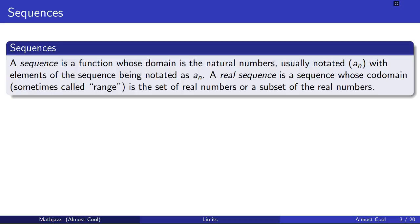So if I plugged in 4 for n, I would be talking about a sub 4, which is the fourth item on the list. A real sequence is a sequence whose codomain is the set of real numbers, and a real sequence is like an infinitely long shopping list of real numbers.